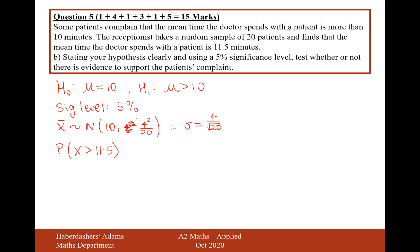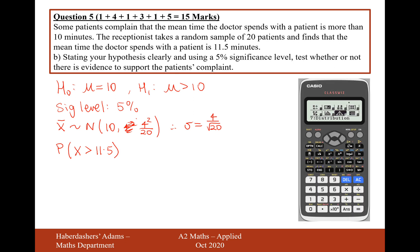Because the patient suspects that the doctor is spending more time than 10 minutes, we're going to look at what the probability would be of the doctor spending 11.5 minutes or more with the patient. Because if the probability of 11.5 is so small that it's not going to have happened at random, but still with the mean of 10 minutes, then there may be some underlying increase in the mean.